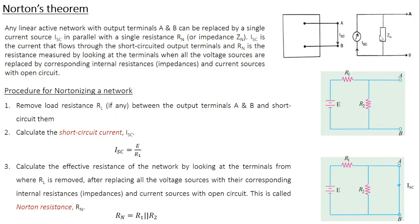Let's now understand the step-by-step procedure for finding the equivalent Norton circuit — this is also known as 'nortonizing' a given network. Imagine you have a DC power supply with voltage E, two external resistances R1 and R2, and AB is the output terminal. For now there is no load resistance between A and B.